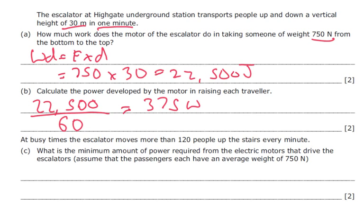At busy times the escalator moves more than 120 people up the stairs every minute. What's the minimum amount of power required for the electric motors that will drive the escalator, assuming that each person is the average of 750 Newtons?